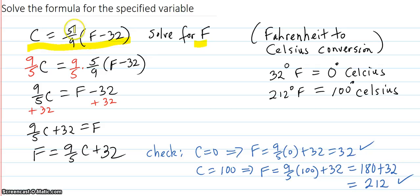So the five ninths is in the way. So we'll remove it by multiplying both sides by the reciprocal nine fifths. So we'll get nine fifths C on this side. The five ninths will cancel out with the nine fifths, so we'll just get F minus 32.